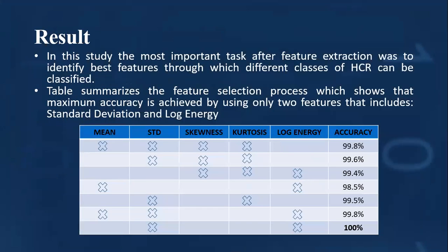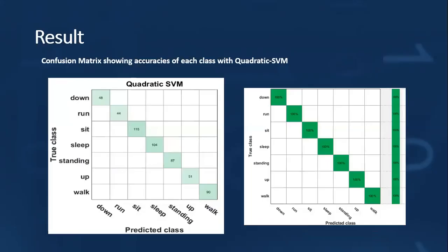In this study, the most important task after feature extraction was to identify best features through which different classes of human context recognition can be classified. This table summarizes the feature selection process which shows that maximum accuracy is achieved by using only two features: standard deviation and log energy. These are the confusion matrices showing accuracy of each class with quadratic SVM.